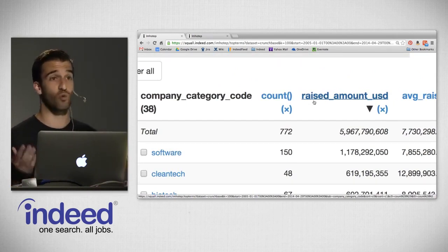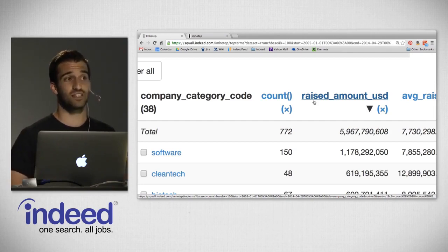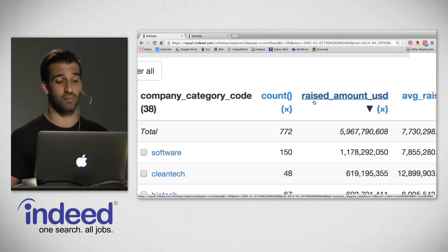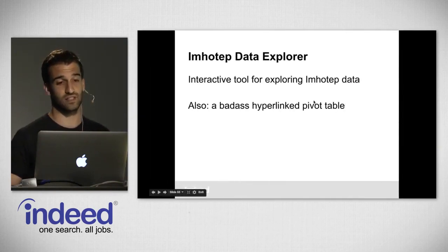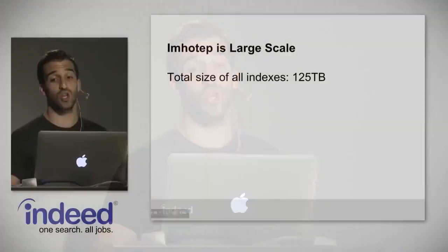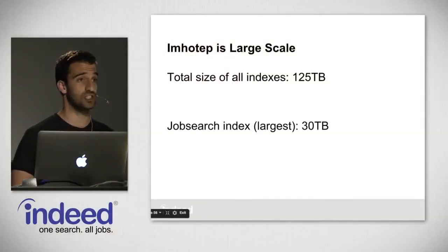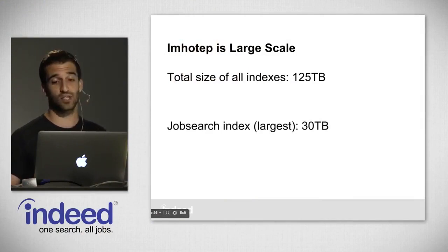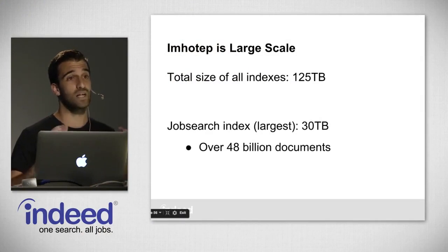We knew nothing about this dataset when I uploaded it, and now we can explore the data and learn a lot more about it interactively through Imhotep Data Explorer. But this dataset is just 48,000 documents. That's pretty small in terms of Imhotep. At its core it is a large-scale interactive analytics tool. The total size of the data we have Imhotep living on top of is 125 terabytes.